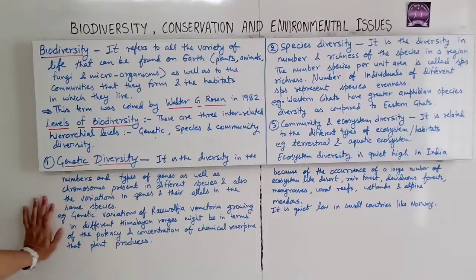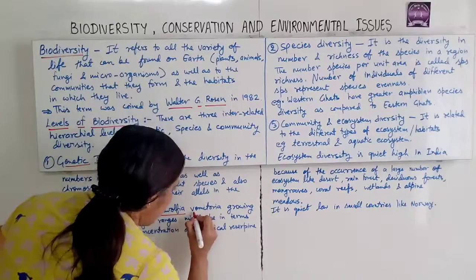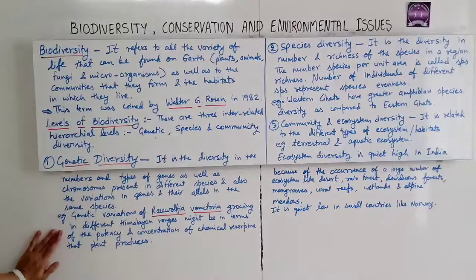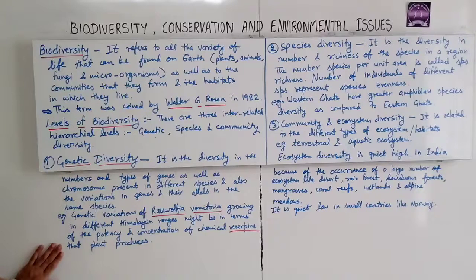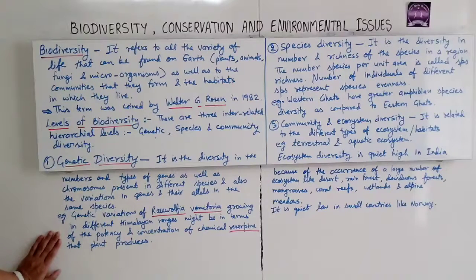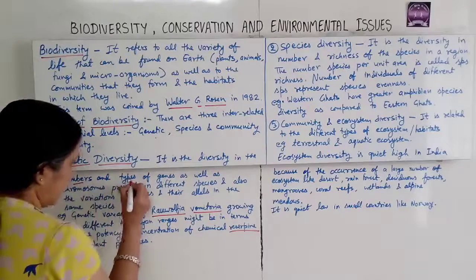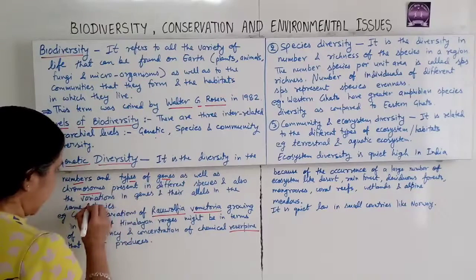An example of genetic variation is Ravolphia vomitoria growing in different Himalayan regions, which may differ in terms of potency. This plant produces the chemical Ravolphia vomitoria, and the concentration of that chemical — in terms of potency — can vary. The main terms here are number and types of genes, chromosomes, and variations.